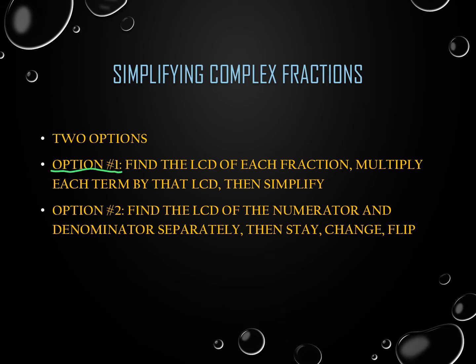Option one: find the least common denominator of all fractions and multiply everything by that one denominator, so the entire expression gets the same denominator, then simplify. Option two: find the least common denominator of the numerator and denominator separately, treat them as separate fractions, then at the end do keep-change-flip and simplify. Both work all the time — you get to choose which one you want to do.